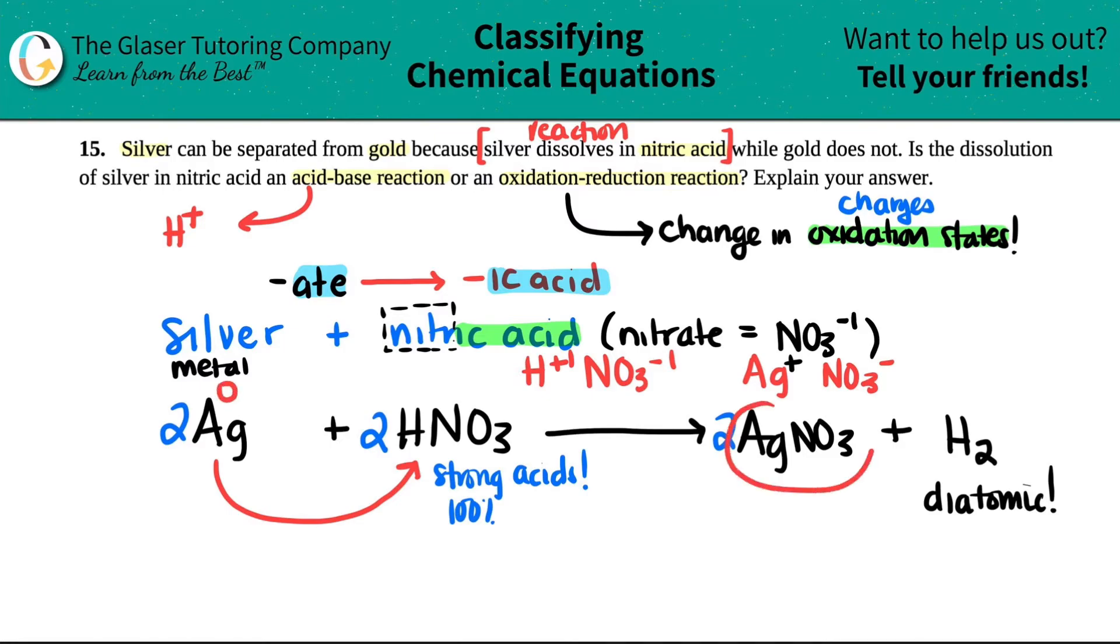But then silver on this side of the equation is with a compound. So it has to have a charge. And the silver had a plus one, and the nitrate was a negative one. And look at the H. H is in a compound in HNO3. So it has to have a charge. In this case, it's a plus one.